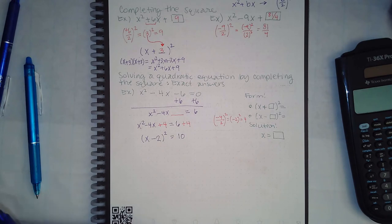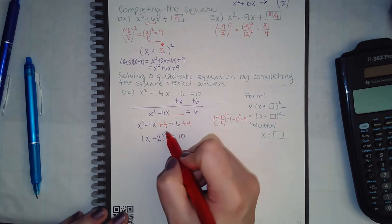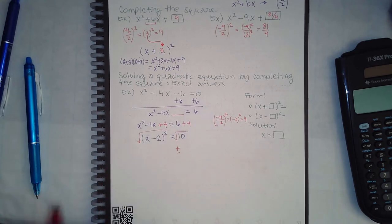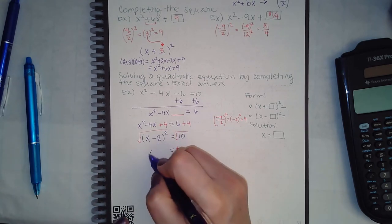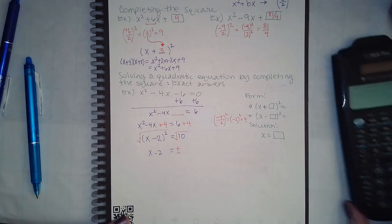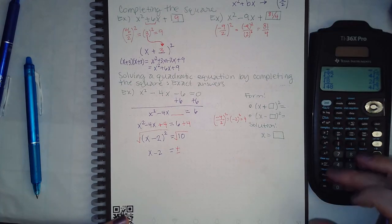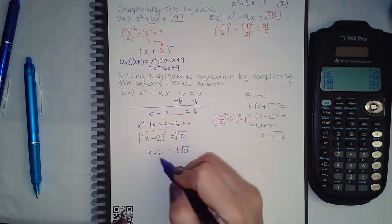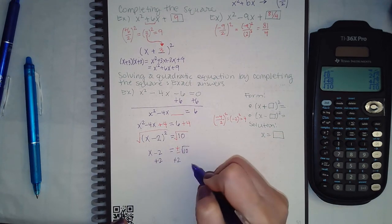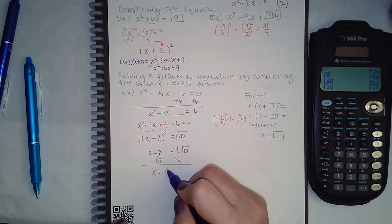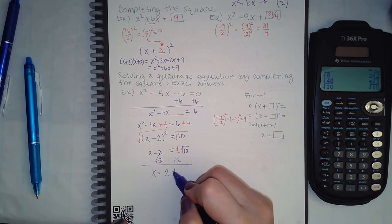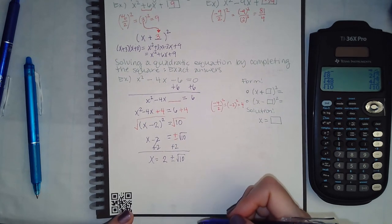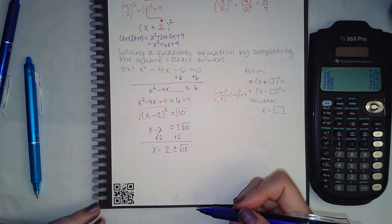Just like the equations we did before, I'm going to take the square root of both sides. When you do that, you get plus or minus on the number side. The square root of 10 does not simplify, so it stays as √10. Then to solve for x, I add 2 to both sides: putting the non-radical term in the front gives x = 2 ± √10.